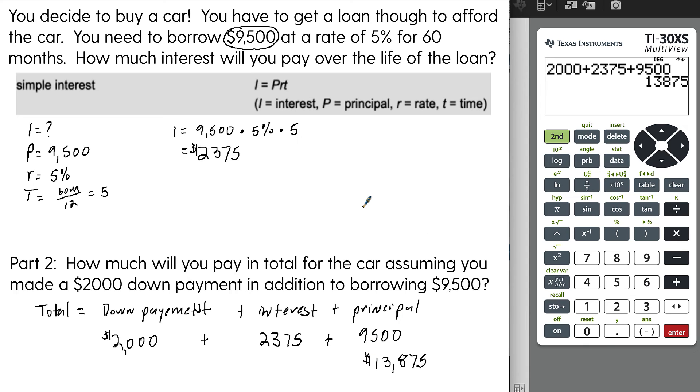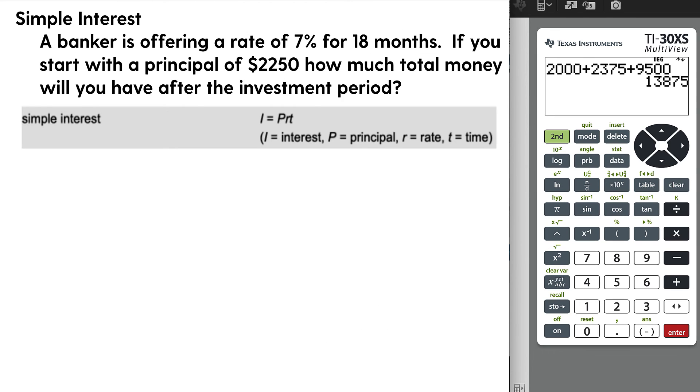So another thing to think about when you have a simple interest problem is: are they asking for the interest, the simple interest only, or are they asking for the total payment? In that case, you will have to add back to the principal. And then sometimes they might even add like a down payment, a little bit of a twist to it. Let's do another one.